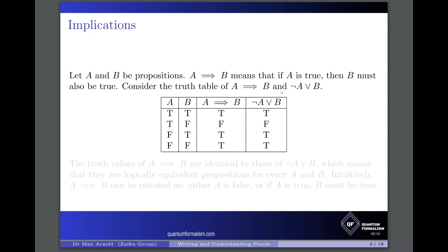We're going to put this alongside the truth table column for the negation of A or B. If A is true, then the negation of A is false. And if B is true, then the negation of A or B is false or true, which is true. If A is true, the negation of A is false, and if B is false, the negation of A or B is false or false, which is false.